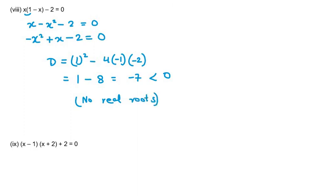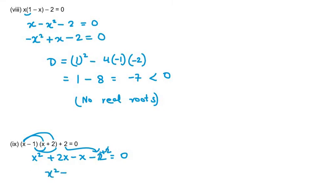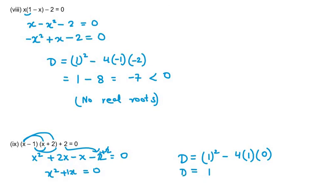The ninth part requires expanding the terms. After expanding, the constant terms minus 2 and plus 2 cancel out, leaving x squared plus x equals 0. D equals b squared minus 4ac. Here b is 1, a is 1, and c is 0. So D equals 1 minus 0 equals 1. Since D is greater than 0, the equation has two distinct real roots.